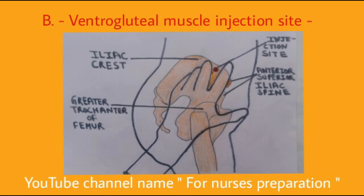To locate the injection site, place your hand over the greater trochanter with fingers facing the patient's head, as shown in the diagram. Always remember: the right hand is used for the left hip and the left hand is used for the right hip. Now place your index finger on the anterior superior iliac spine and move your middle finger back along the iliac crest. The V-shaped triangle formed between your fingers — the center of this triangle is the site of injection.